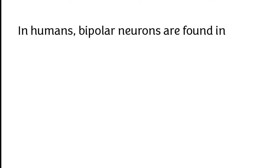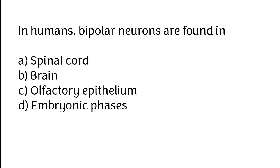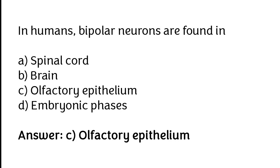In humans, bipolar neurons are found in: spinal cord, brain, olfactory epithelium, embryonic phases. The correct answer is option C. In humans, bipolar neurons are found in olfactory epithelium.